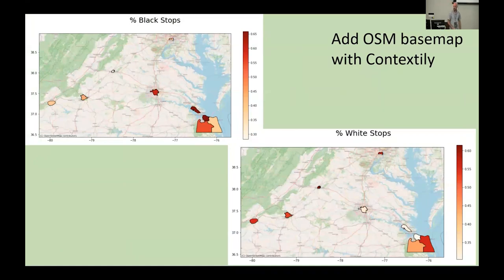You can take your GeoPandas GeoDataFrames and use a couple of other nice mapping libraries. Contextily is one of them — you can add, for example, an OpenStreetMap basemap, which is nice to look at.